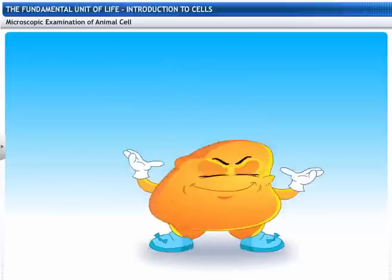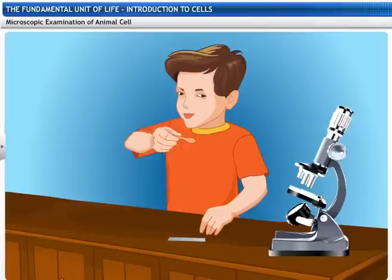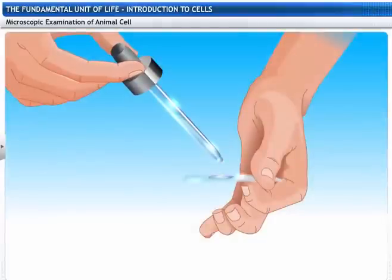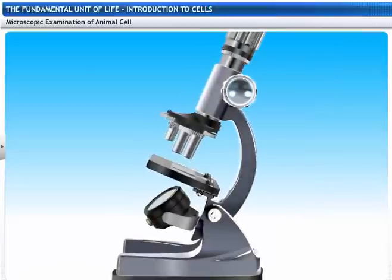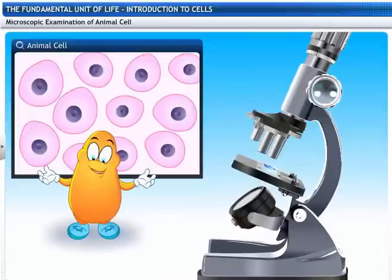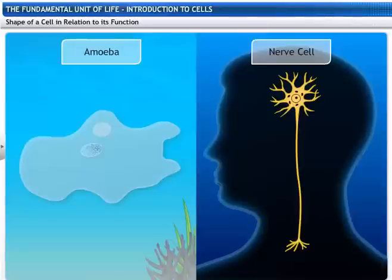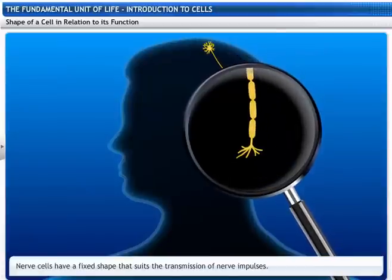We shall look at an animal cell now. Let's begin with an ice cream spoon. Scrape the inside of your cheek using this spoon. Spread the collected mass in a drop of water on a glass slide. Add a drop of methylene blue. Place a cover slip on it. Now let's observe the cells under the microscope. Look! These cells have darkly stained spherical nuclei at their center. The shape of a cell is related to the specific function it performs. Cells like amoeba change their shapes for motility. Cells like nerve cells have a fixed shape that suits their function of transmitting nerve impulses.